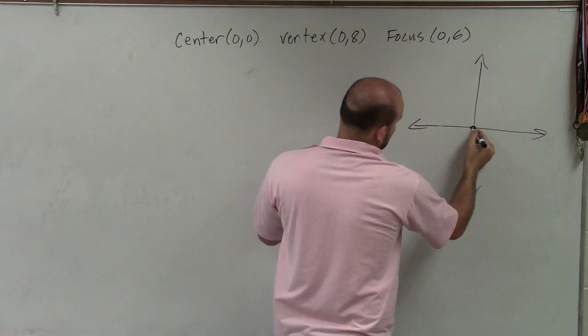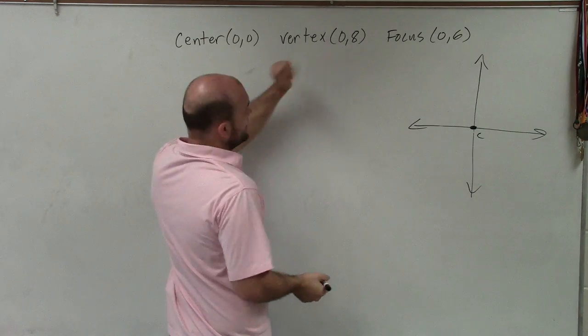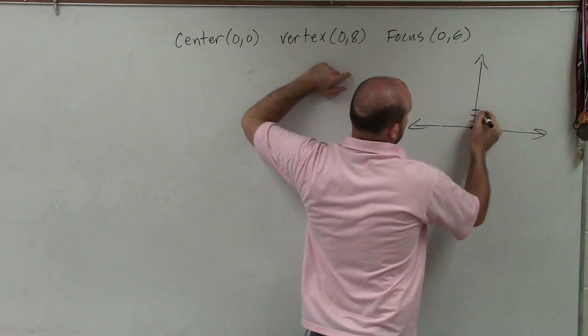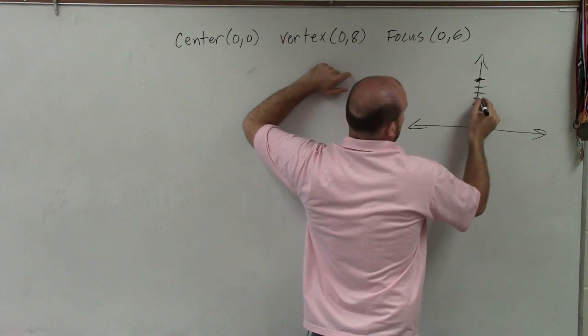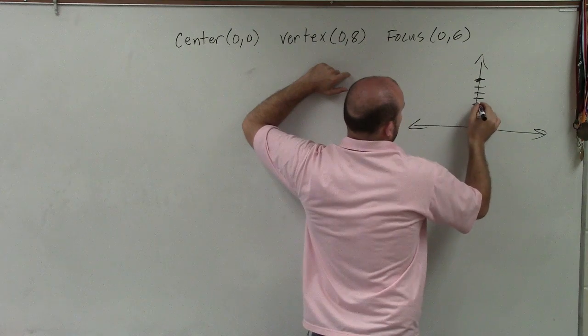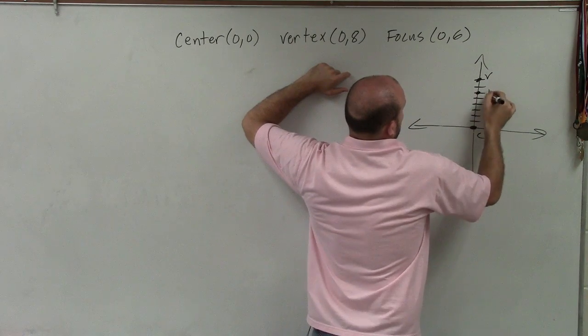So we know our center is at (0,0). Our vertex is at (0,8). So 1, 2, 3, 4, 5, 6, 7, 8. And our focus is at (0,6). 1, 2, 3, 4, 5, 6.